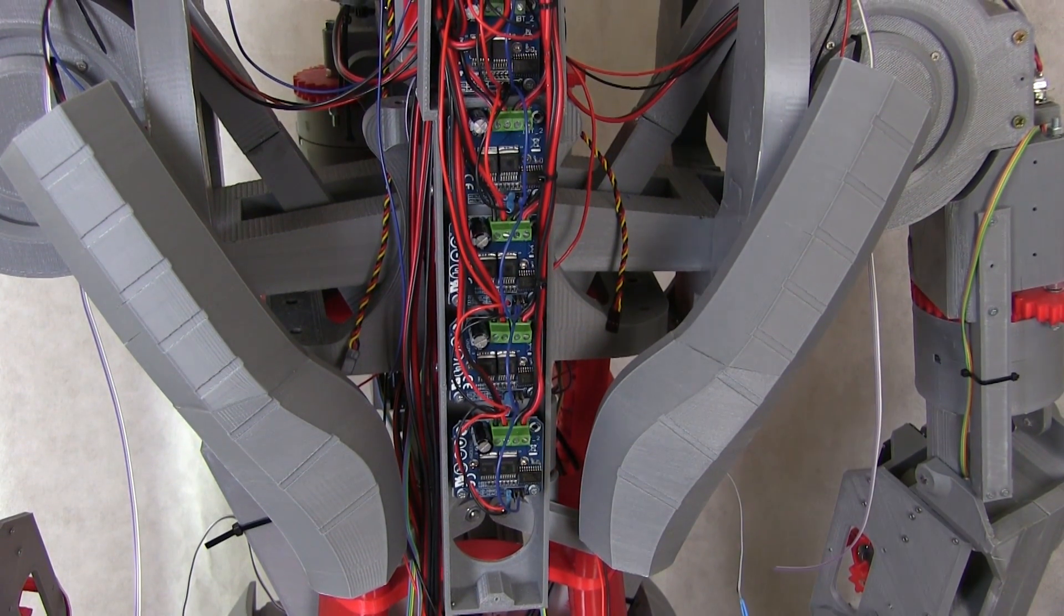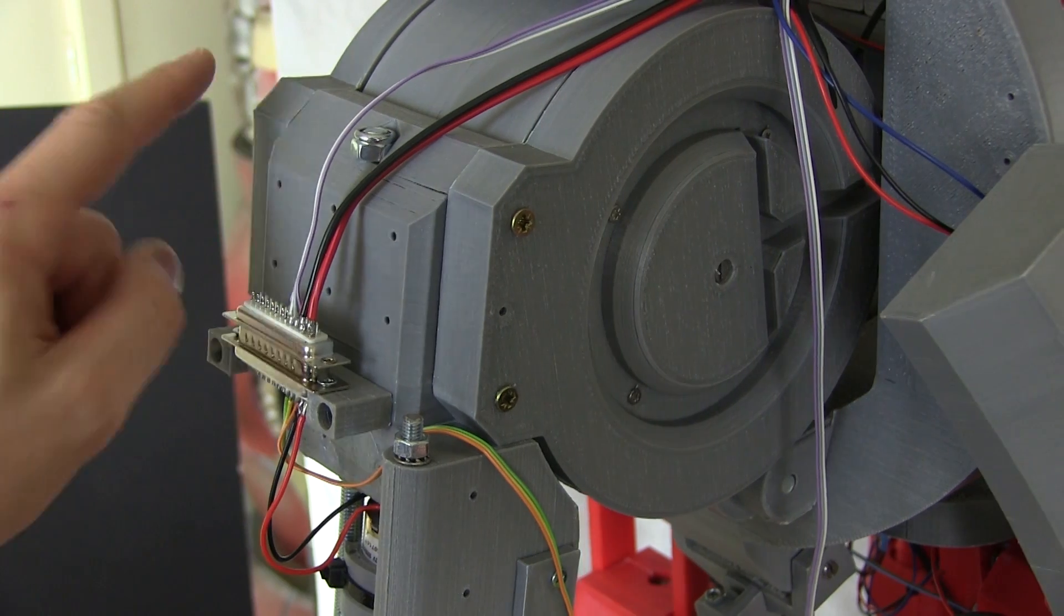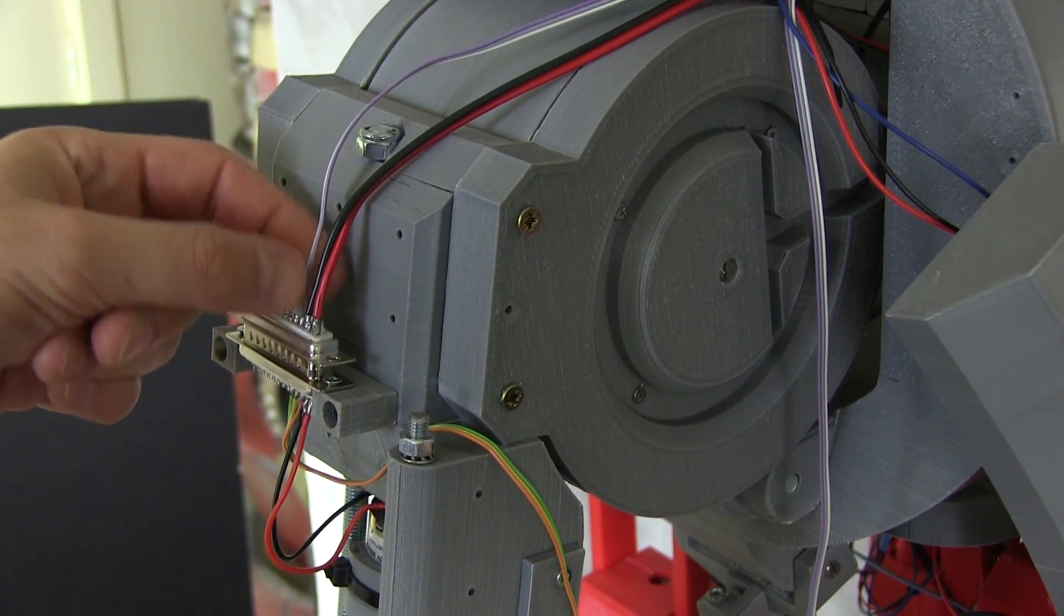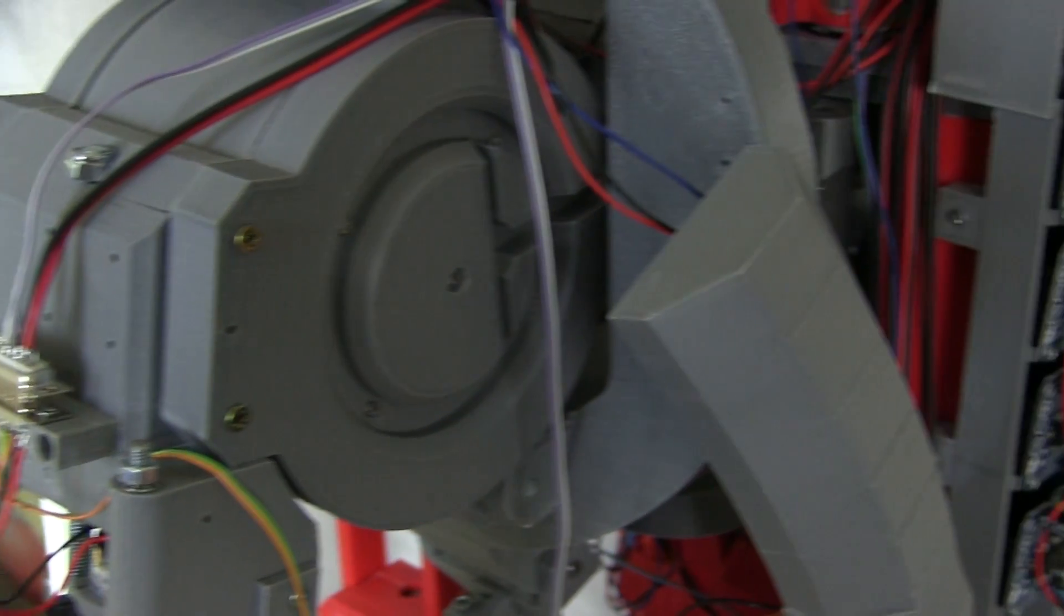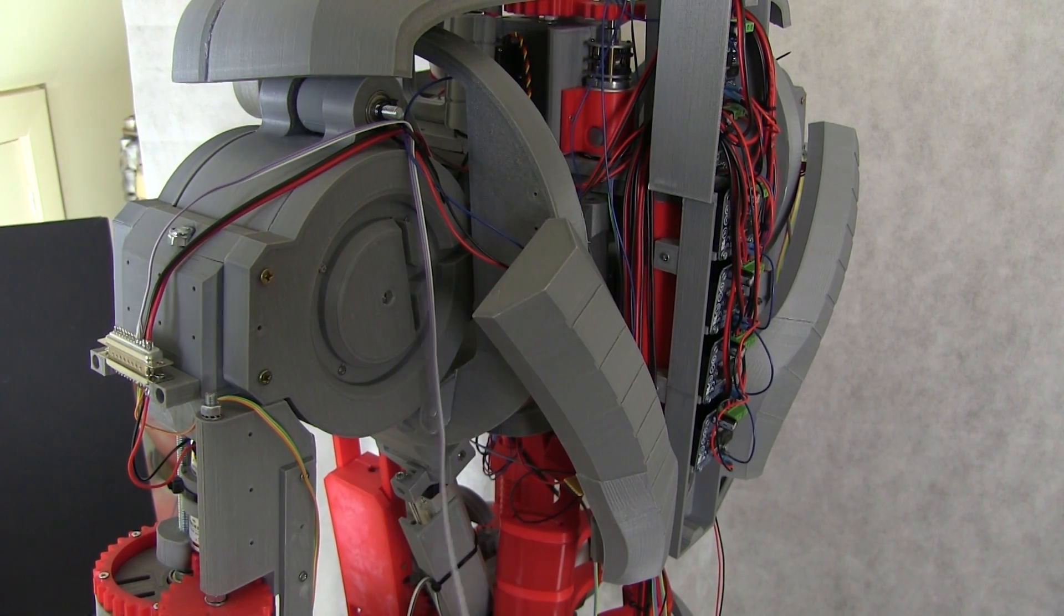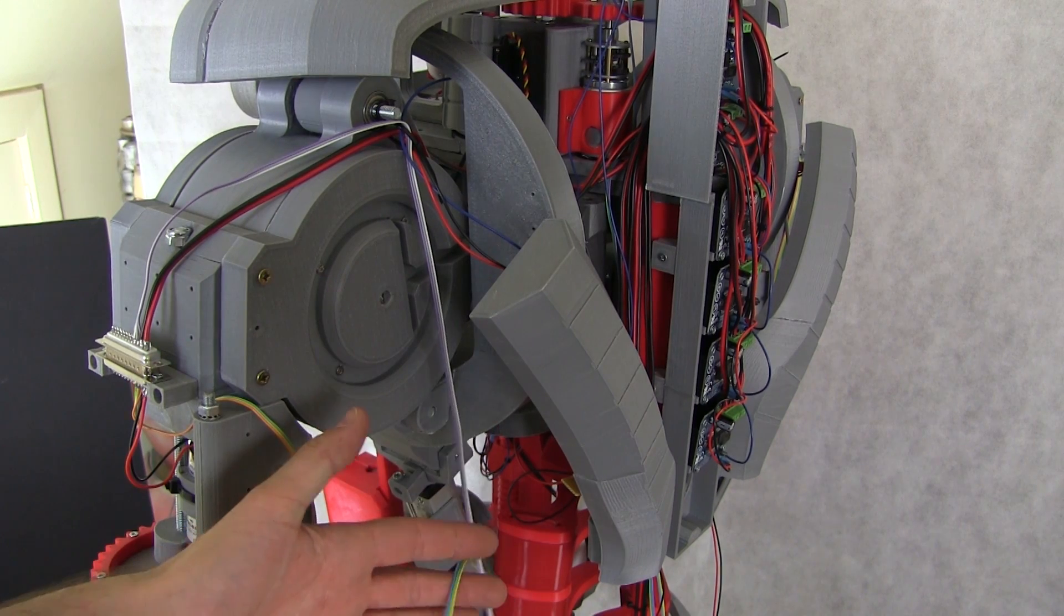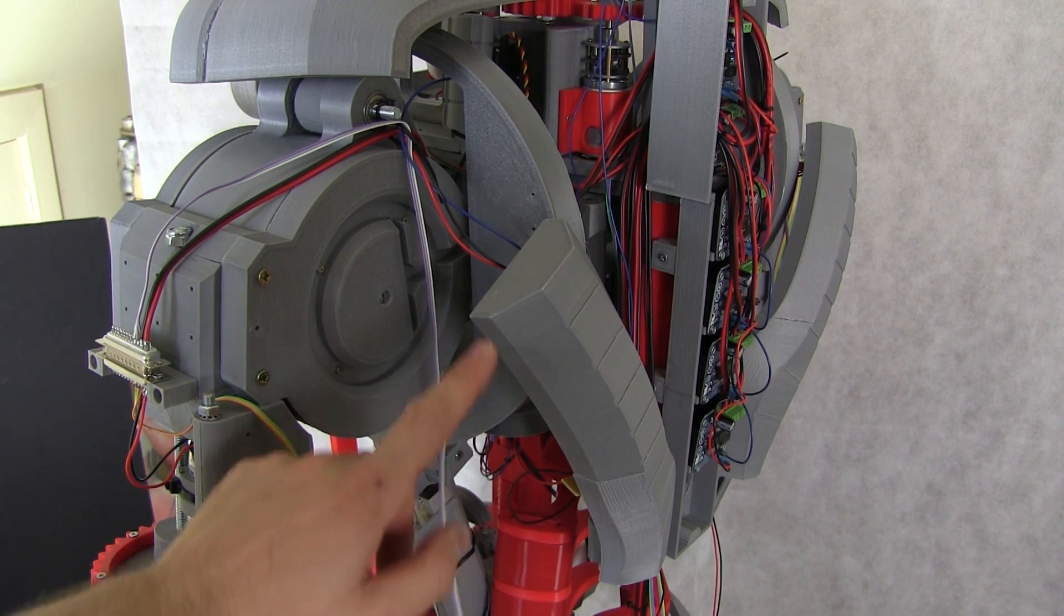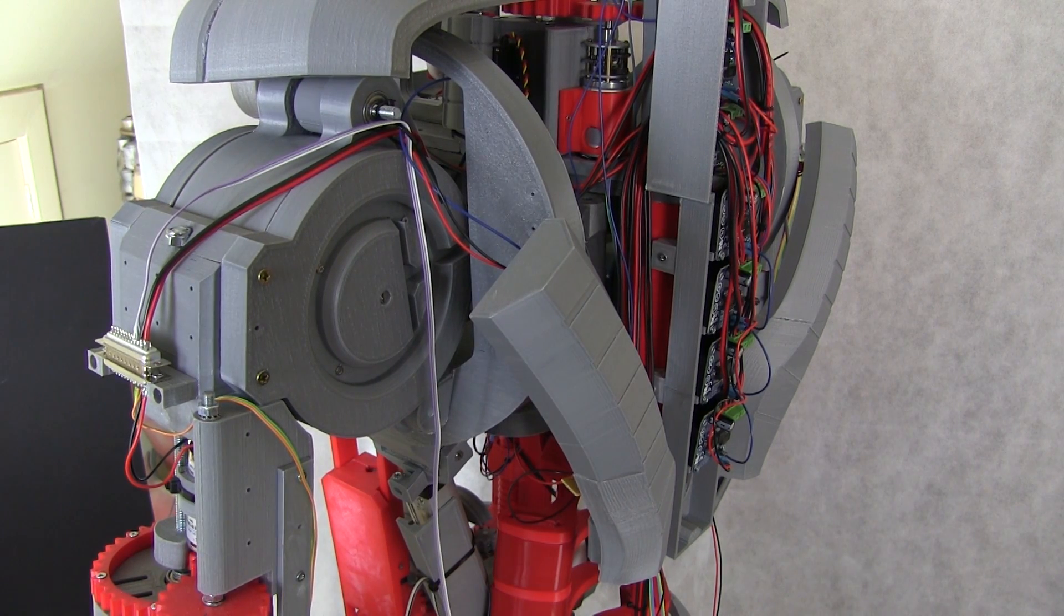I'm starting to cable in the feedback pot cables which are of course on this connector for the arms and in various other places for the other joints hanging around here. These all need to be cabled into the Arduinos, and then I still need to cable from the Arduinos into the motor drivers so that we can make the whole system.